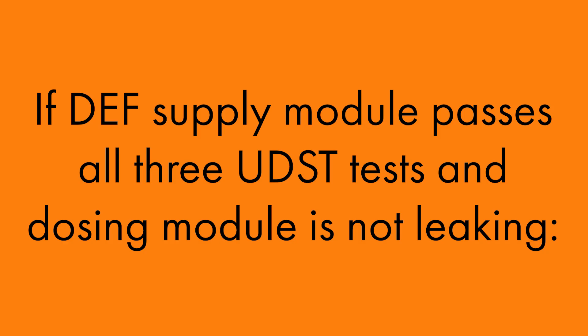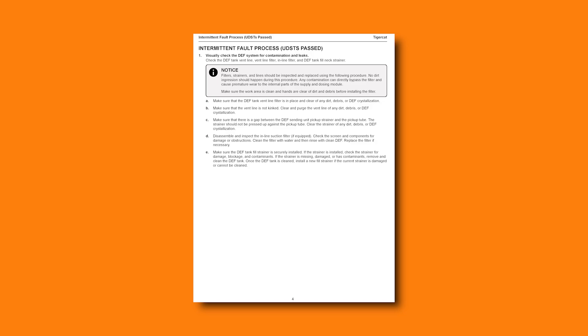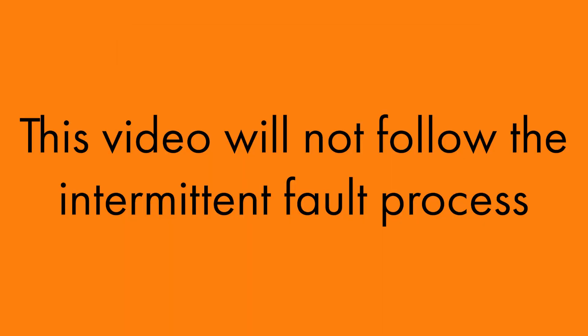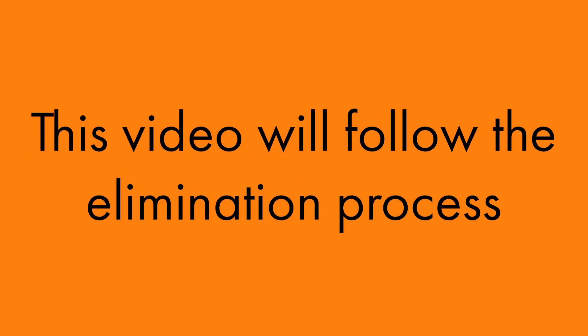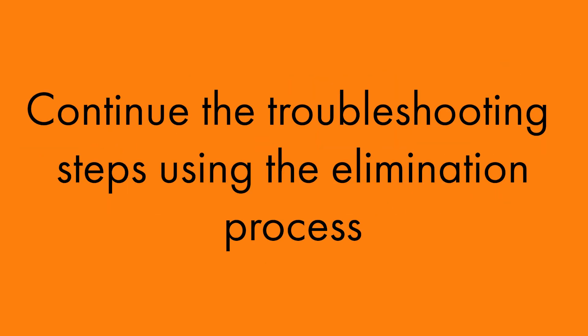If the DEF supply module passes all three UDST tests and you have confirmed that the dosing module is not leaking, the fault is intermittent. If this is the case, follow the intermittent fault process in the troubleshooting guide. For this video, we will not be following the intermittent fault process in order to show the testing of all components — this video will follow the elimination process. If the DEF supply module fails one or more of the UDST tests and you have confirmed that the dosing module is not leaking, continue the troubleshooting steps using the elimination process.